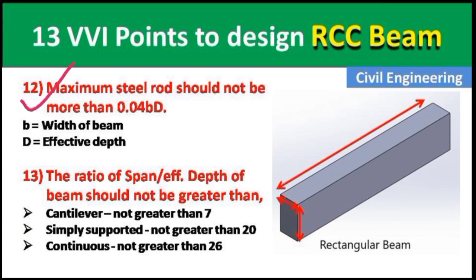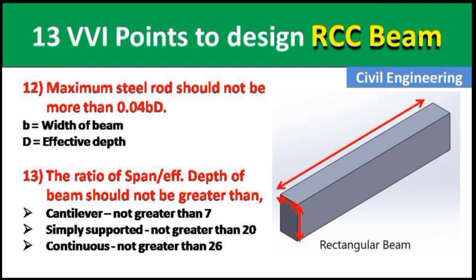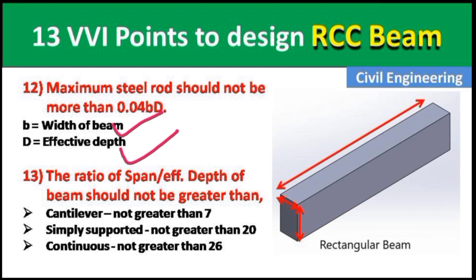Point 12: The maximum steel area should not be more than 0.04 × b × d, where b is the width of the beam and d is the effective depth.